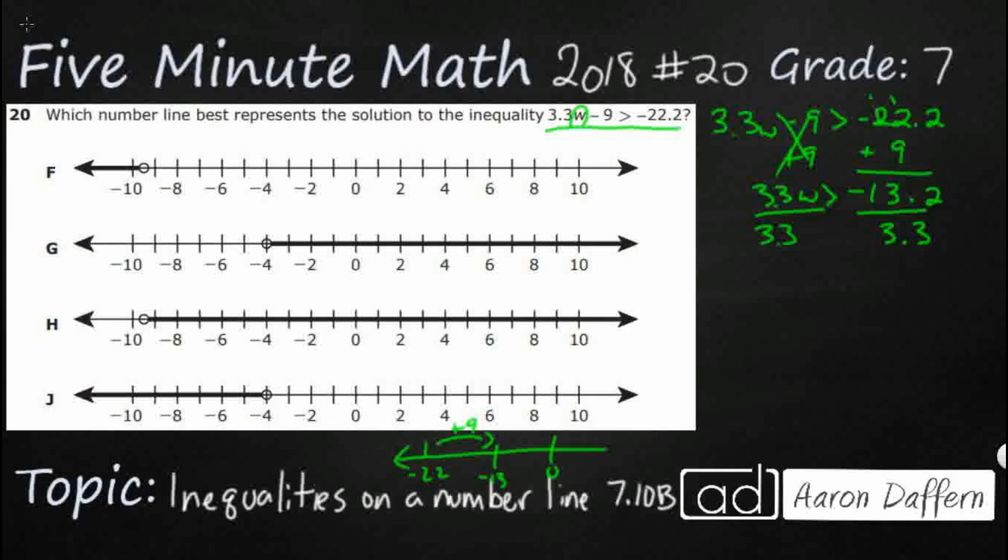So that's kind of a gross one right there. It's going to be W is greater than what in the world is 3.3 into negative 13.2. I'm going to multiply both of these by 10. I'm going to get that decimal out of there.